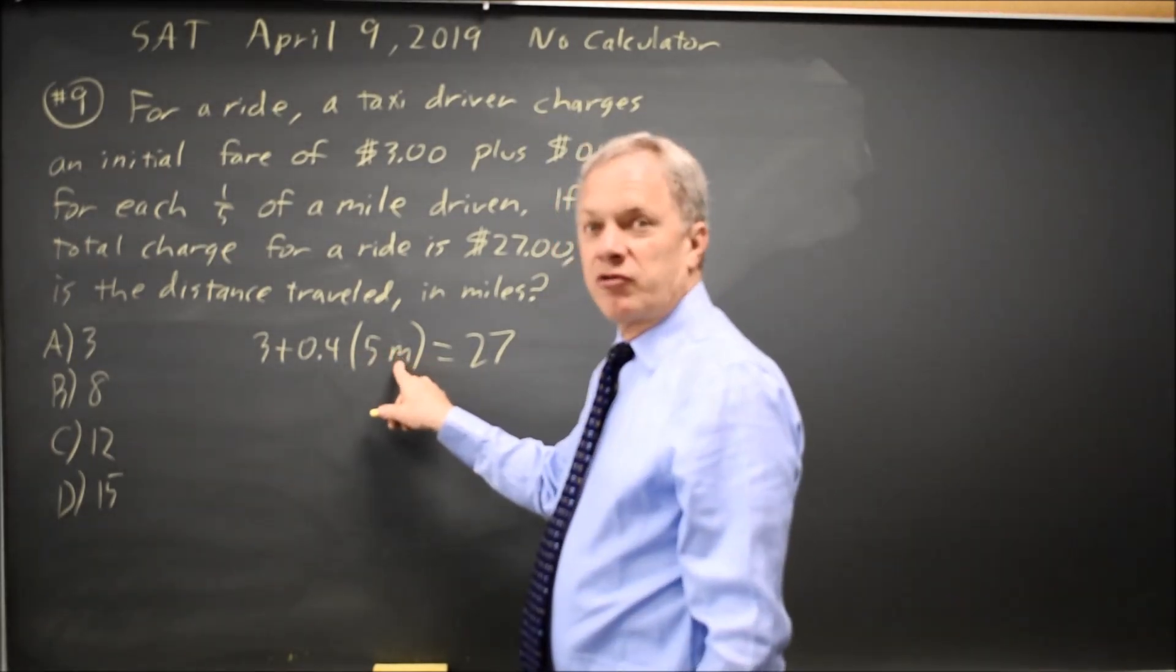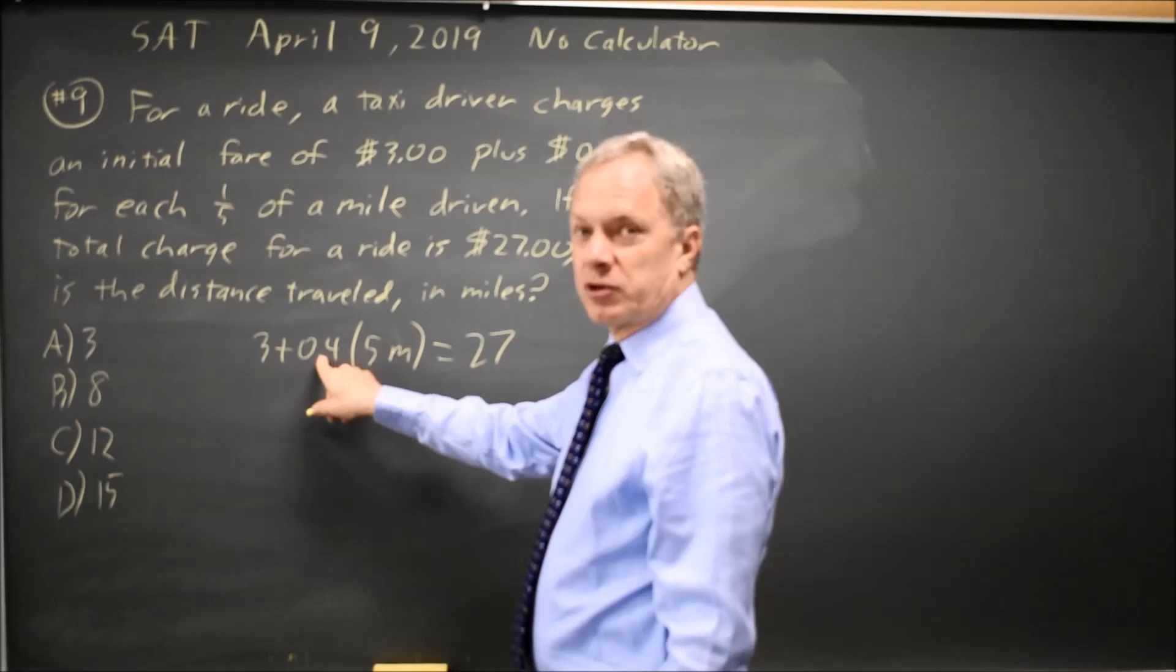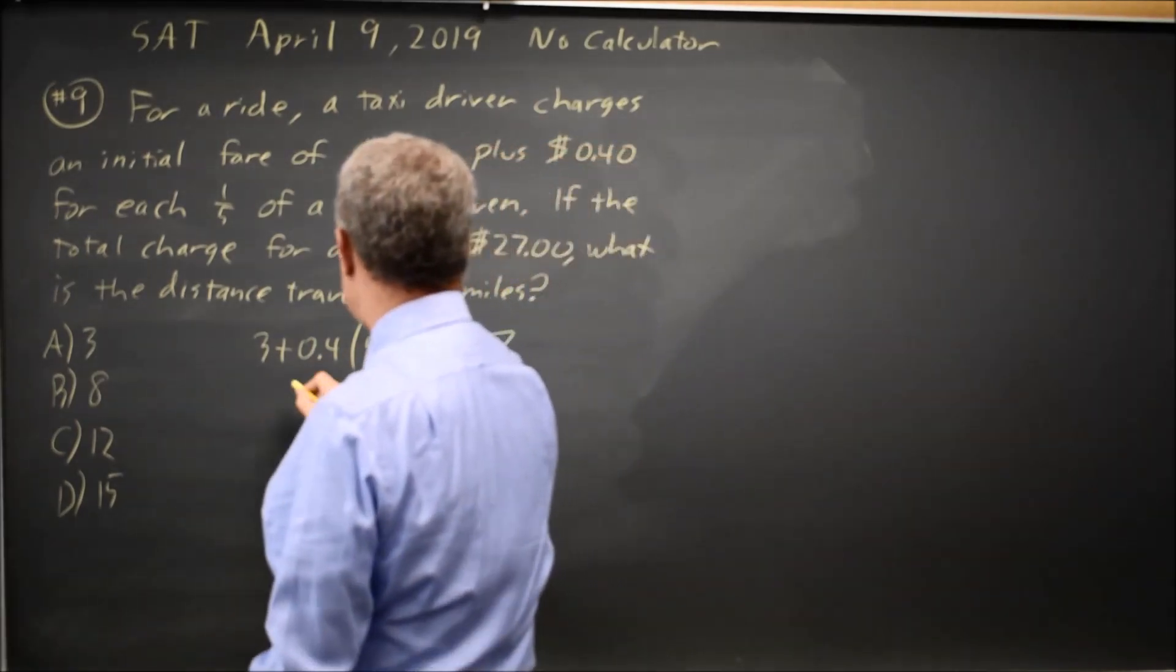And if we have 1 mile, we'll have 5 fifths of a mile, so we're multiplying the 40 cents per fifth of a mile by the correct number here. It's worth checking that.